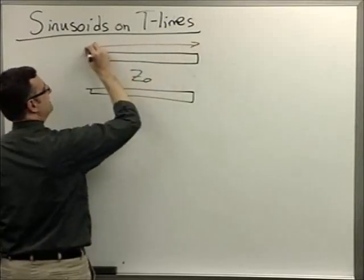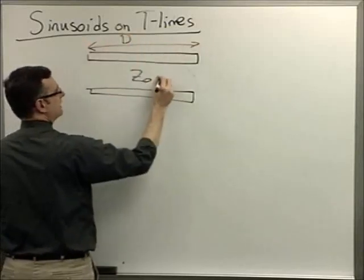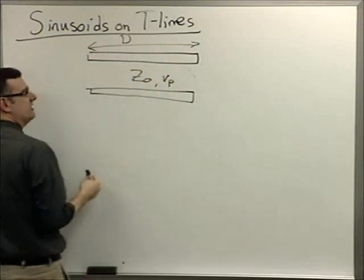Sinusoids on transmission lines. Okay, so let's draw our transmission line. It's going to look the same as it always did. Device hasn't changed, but our excitation has. We're going to have a distance d, a velocity of propagation and an intrinsic impedance.